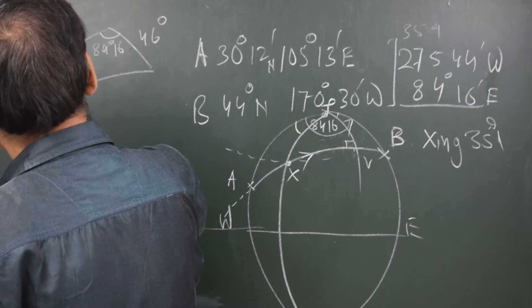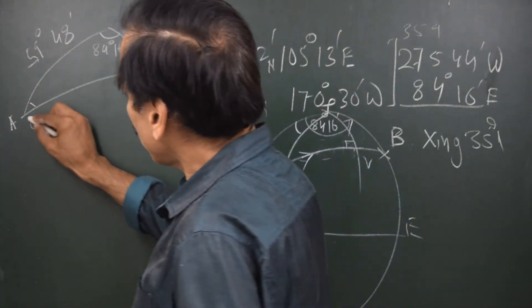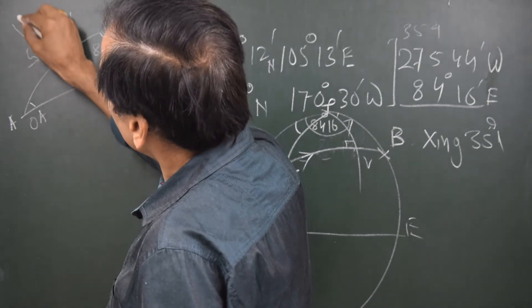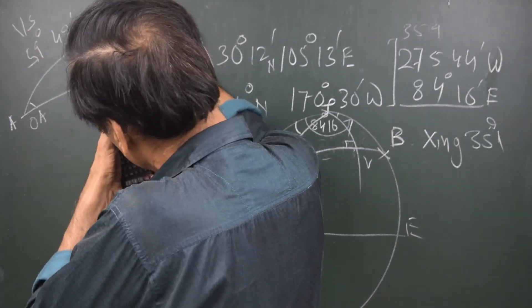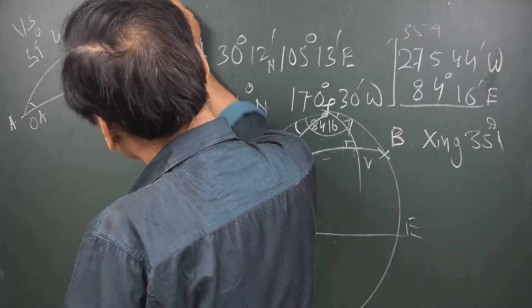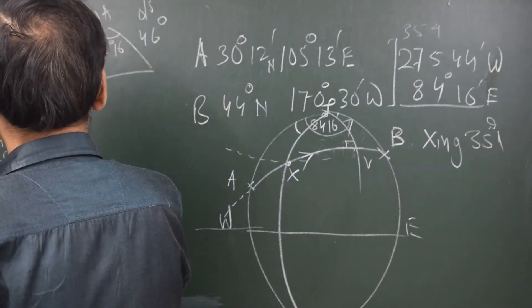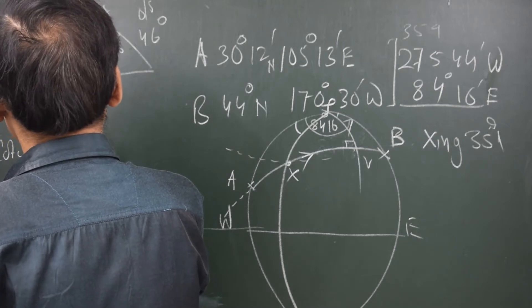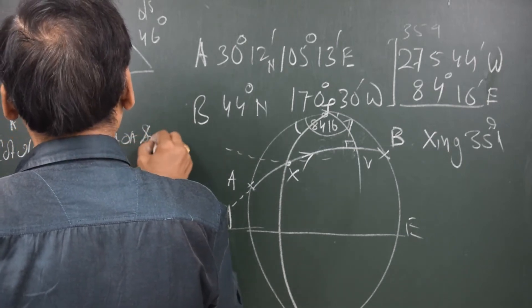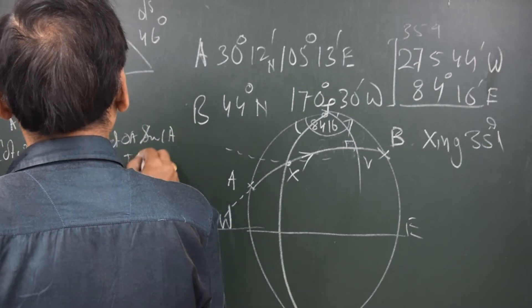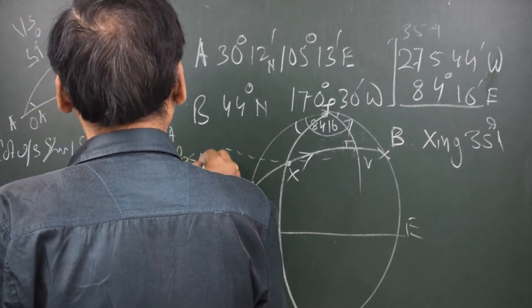I want to find out what is the initial course A. In the Napier diagram this becomes the outer angle, this becomes an inner side, this becomes an inner side, this becomes the inner angle, and this becomes the outer side. The formula says: cotangent of outer side times sine of inner side equals cotangent of outer angle times sine of inner angle plus cosine of inner side times cosine of inner angle.